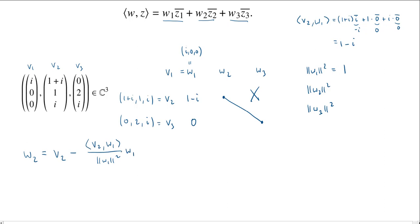W1 is i, 0, 0, and the square of the norm is taking the square of the absolute value or complex norm of these. i has length 1, the square is 1, plus 0 squared plus 0 squared. So the square of the norm of W1 is 1. Then we multiply by W1. Let's expand it out. W2 is 1+i, 1, i minus—we have this nice table—the inner product of V2 and W1 is 1-i divided by 1 times W1, which is i, 0, 0.